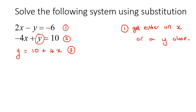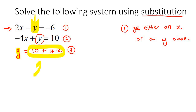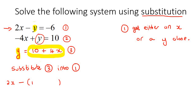Then we use the process of substitution — substitution means you are going to replace something. We look at the equation we haven't used yet and find the Y, because we also have a Y there. We will take all of equation three and put it in that Y's position. So we're replacing this Y with 10 plus 4X, but it must go in brackets. We substitute equation number three into equation number one, and end up with 2X minus (10 plus 4X) equals negative 6.